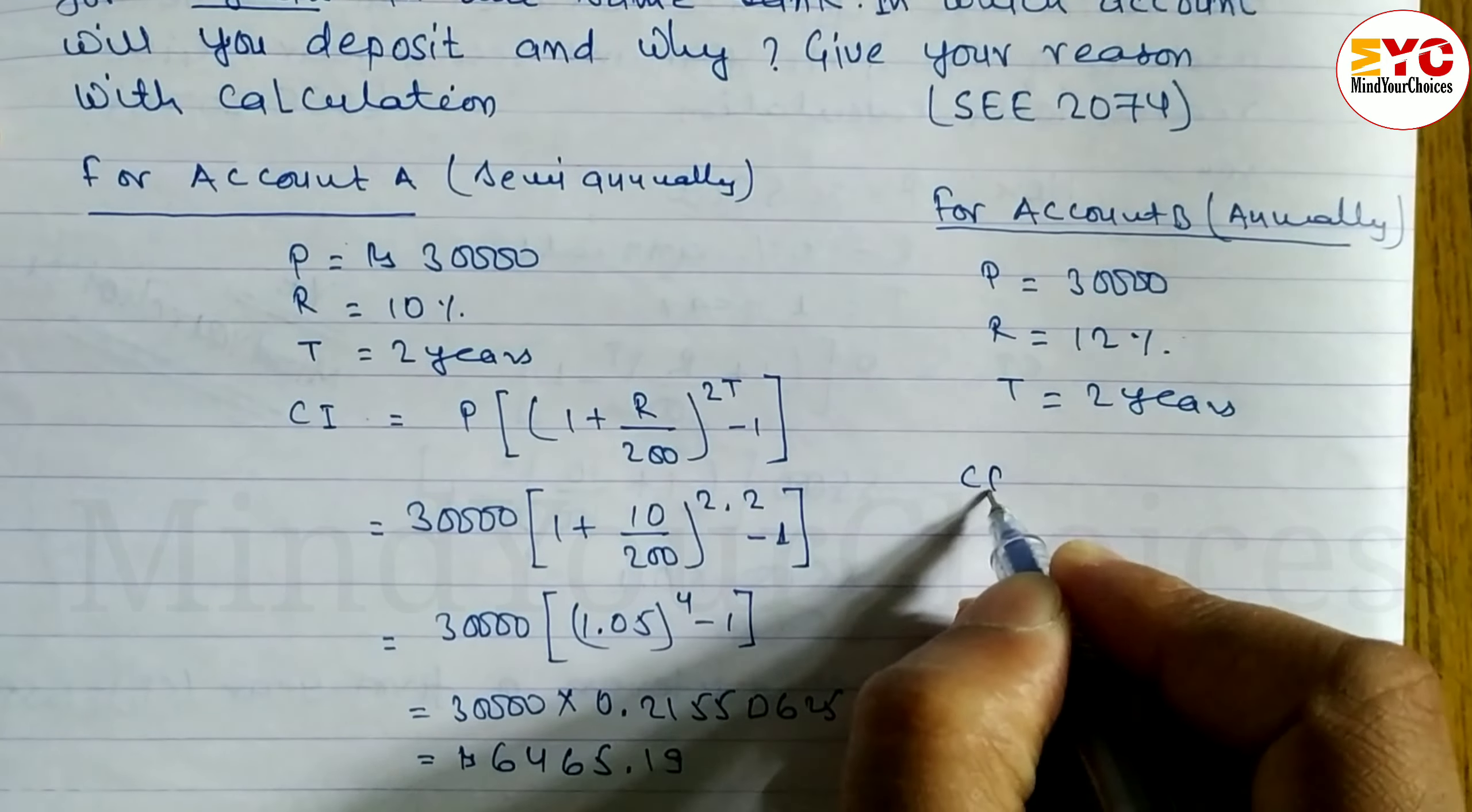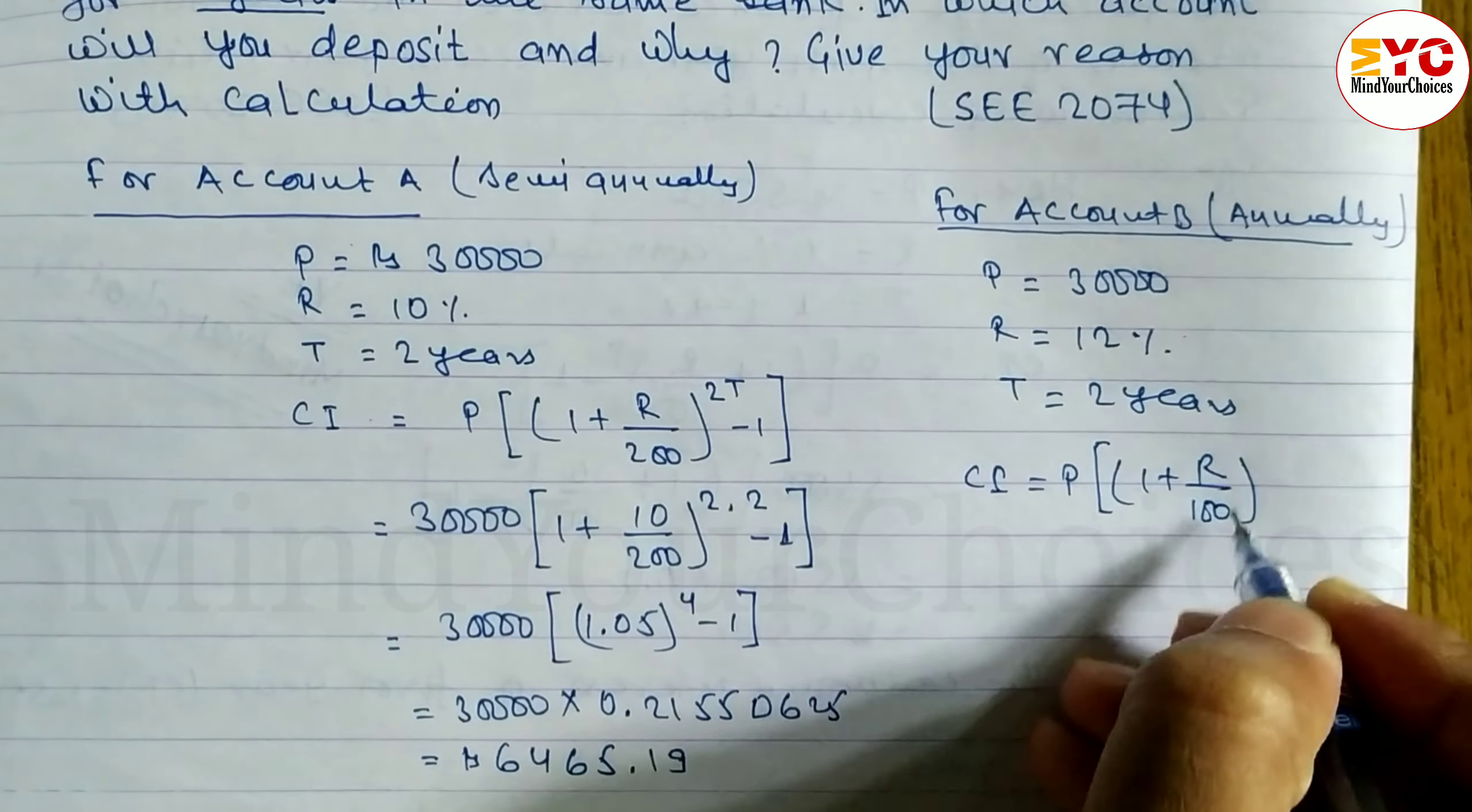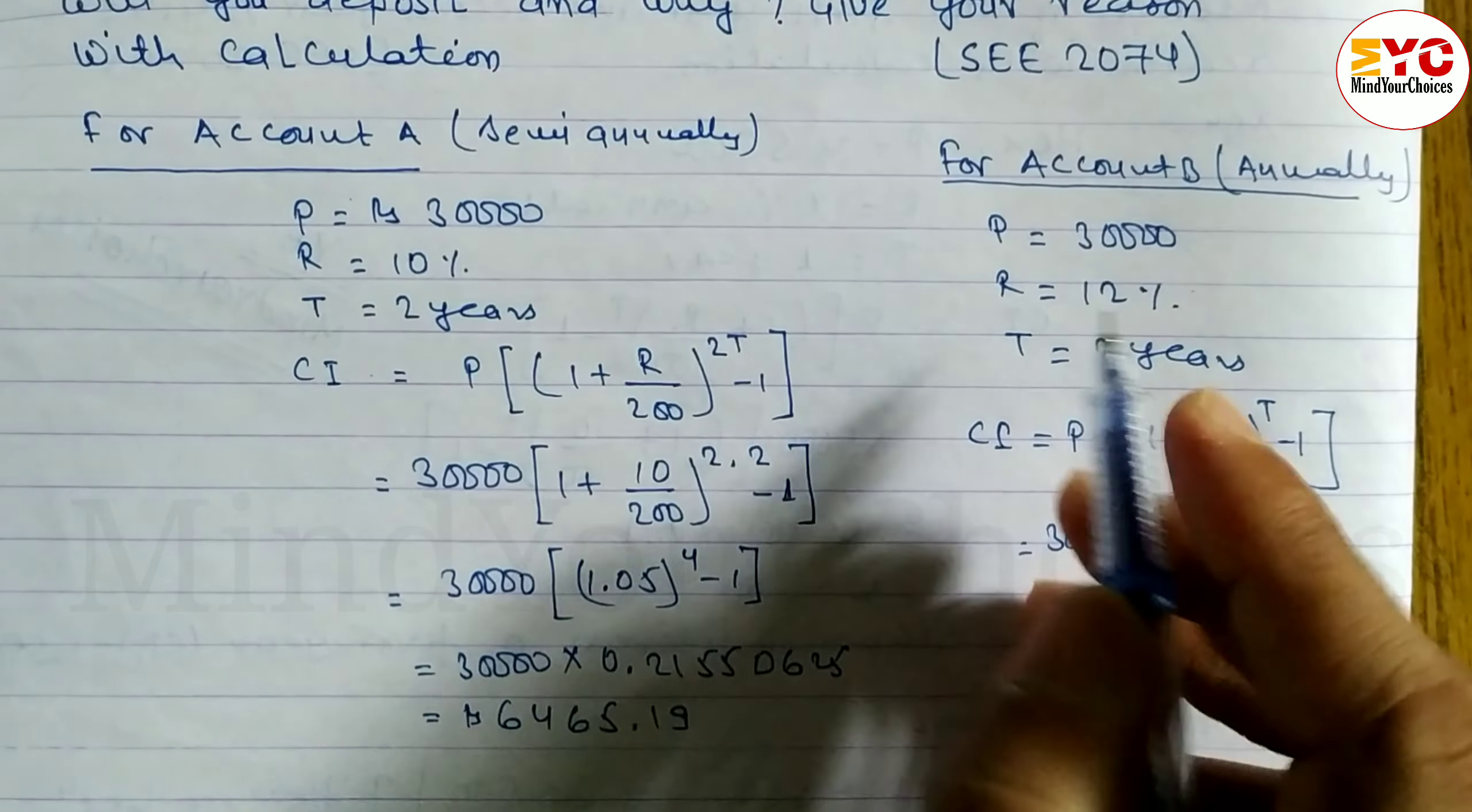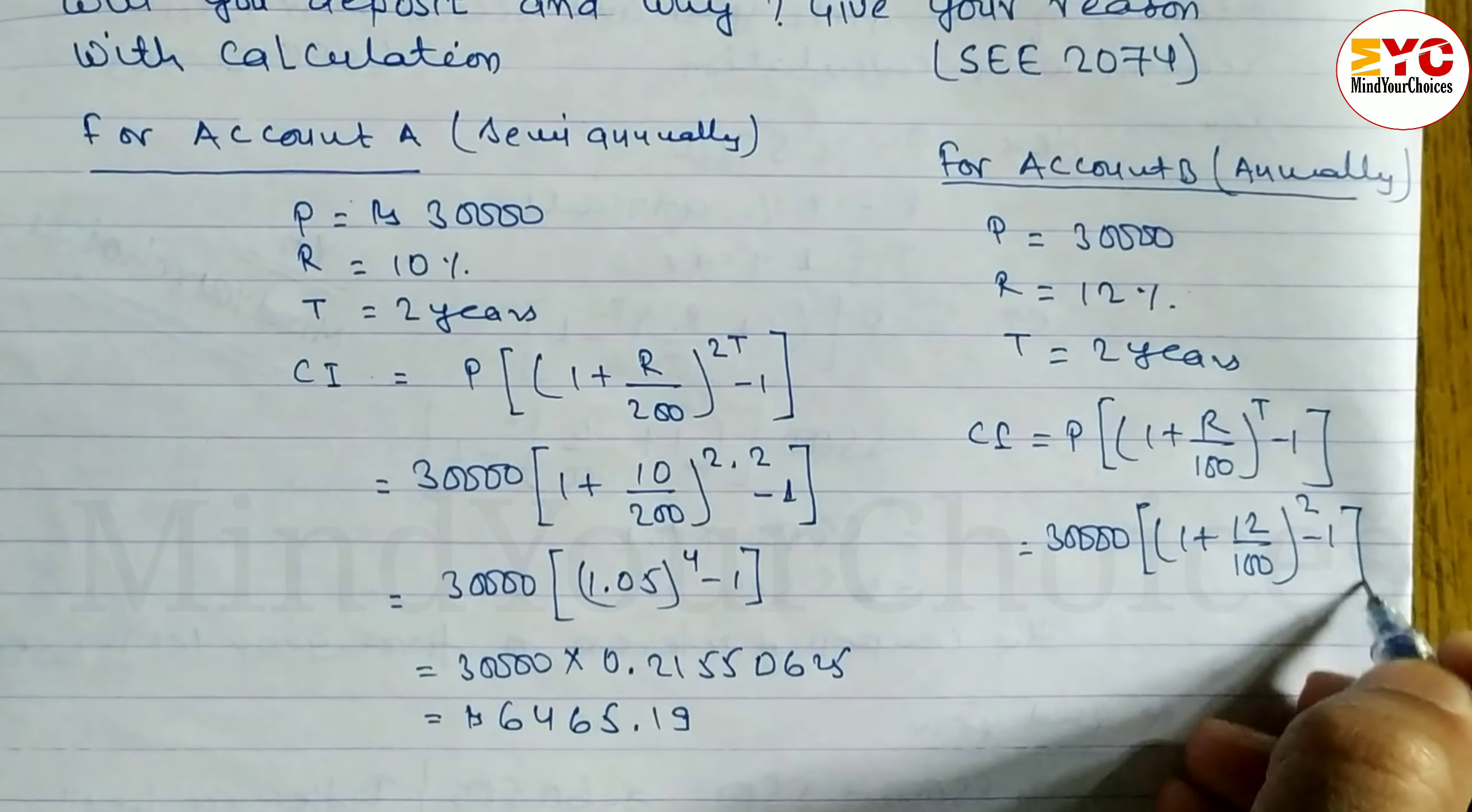So we have to use annually formula. CI formula. Formula is P times 1 plus R by 100 power T minus 1. P's value is 30,000. 1 plus R, R's value is 12, so 12 by 100 power T.